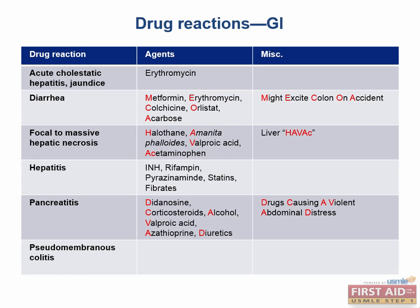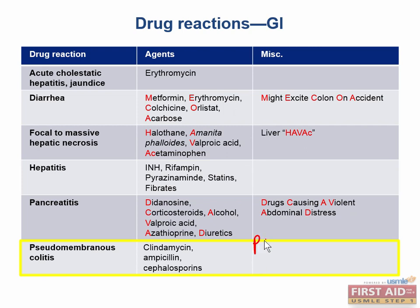There are a few drugs worth knowing for causing C. diff: clindamycin, ampicillin, and cephalosporins. Since we're committed to helping you maximize your board score, let's talk about the treatment of C. diff. If you're this poor patient with C. diff, you're going to give oral metronidazole. If that is not an option among your five answer choices, you can also resort to oral vancomycin.